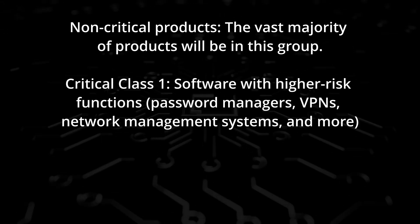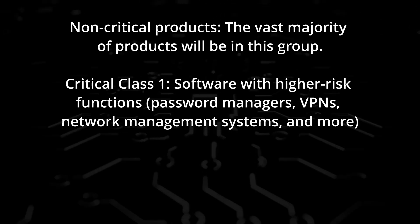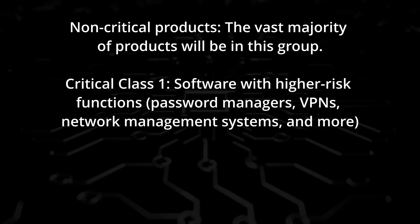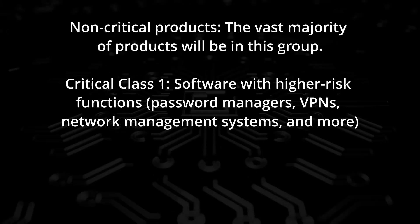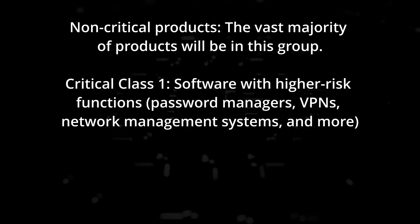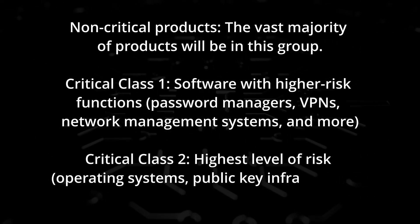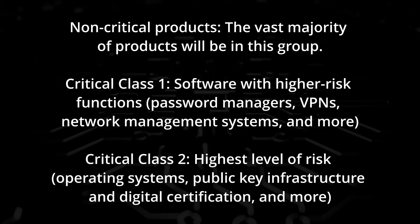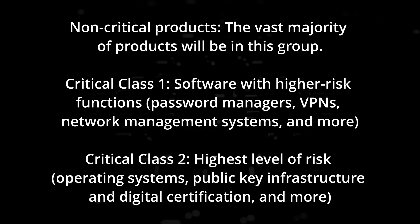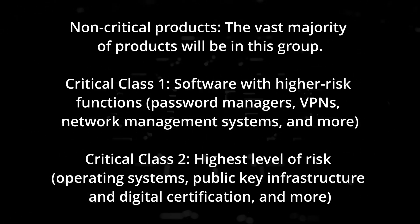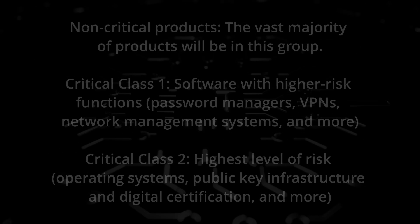The second category is Critical Class 1, which includes software with higher risk functions such as password managers, VPNs, network management systems, or remote access software. The third is Critical Class 2, reserved for products that have the highest level of risk: operating systems, public key infrastructure and digital certification, general purpose microprocessors, or routers.